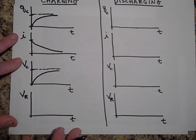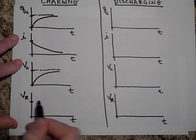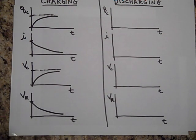And the voltage across the resistor should be matching the current because the current times R is the voltage across the resistor. So there you have it.